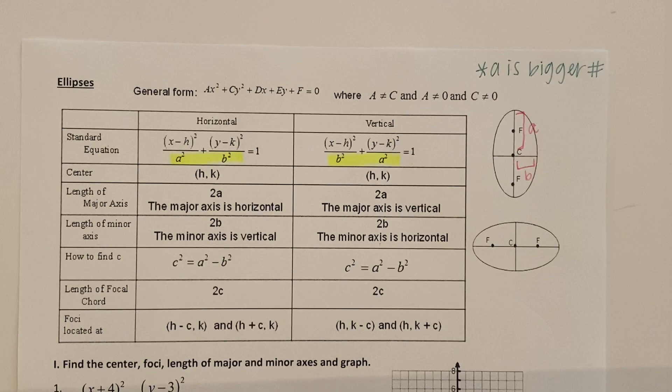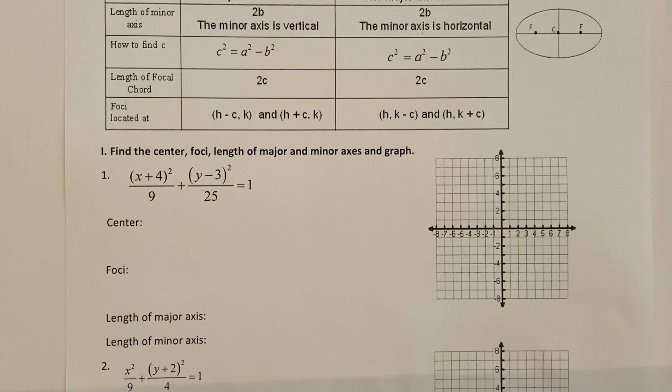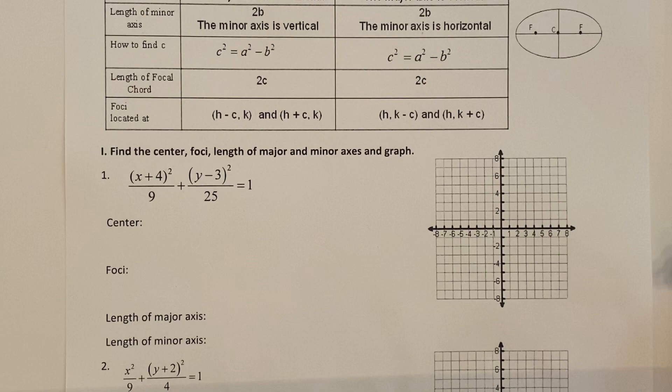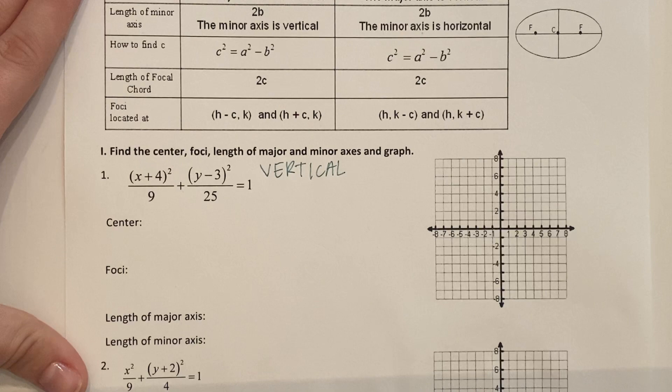Let's do some graphing. Number one. So the first thing we need to decide is is this ellipse going to be horizontal or vertical. So when you look out where is the bigger number. So for this problem the bigger number is under the y value. That means this will be a vertical ellipse.